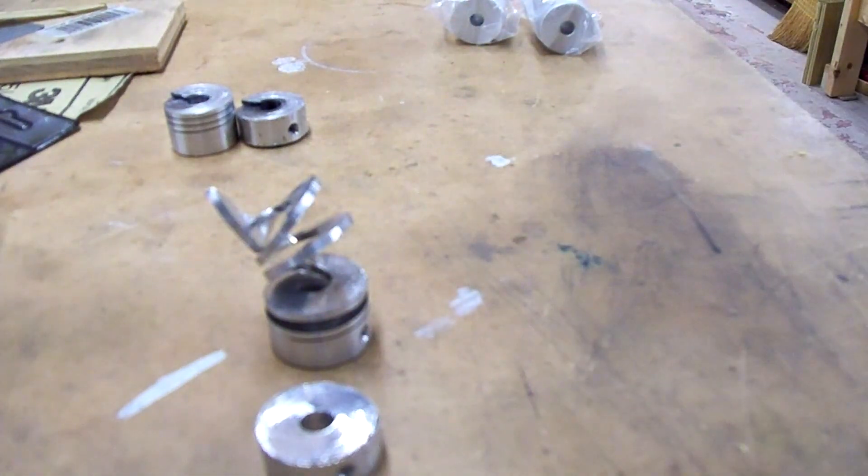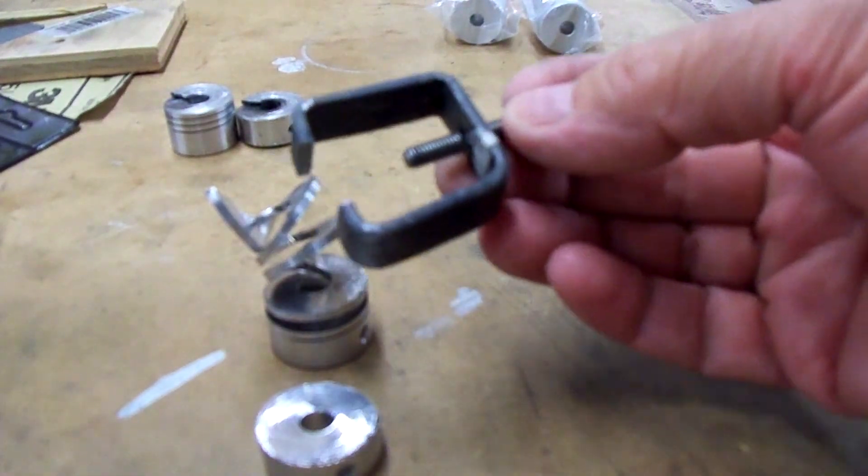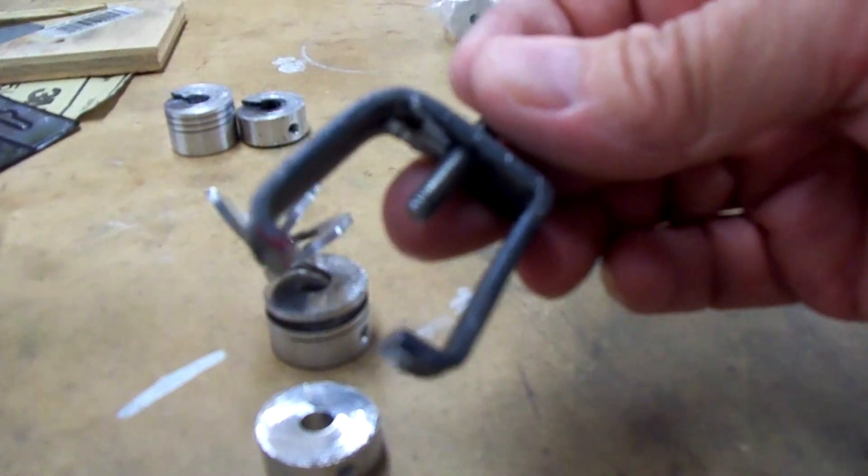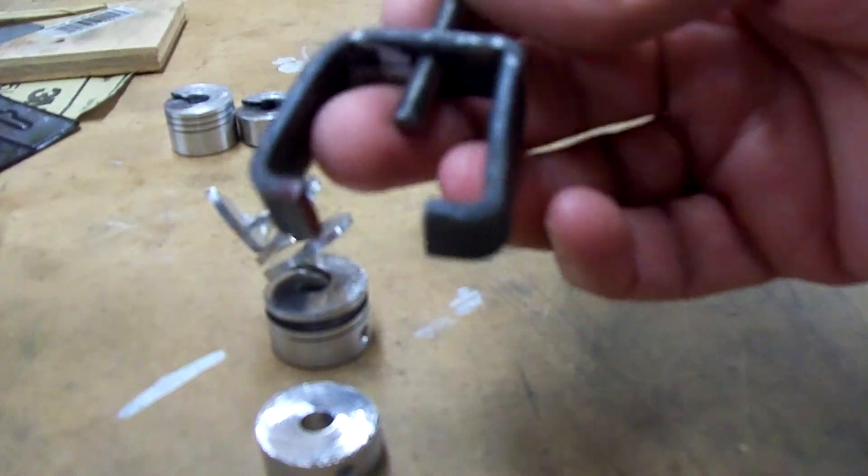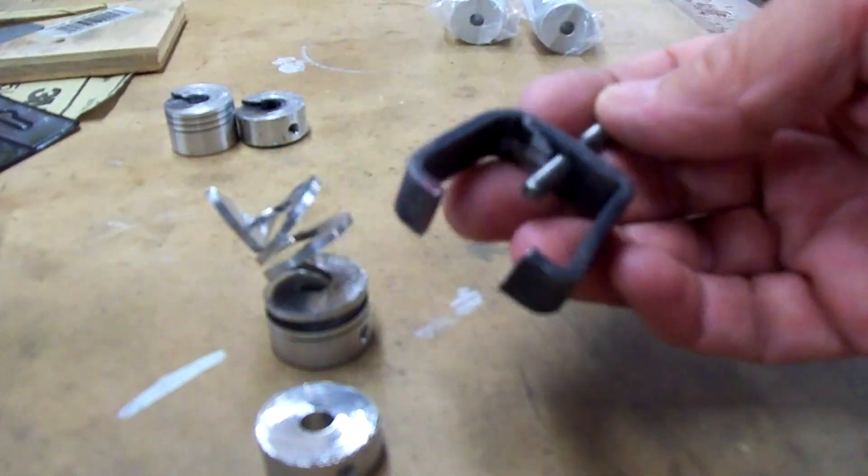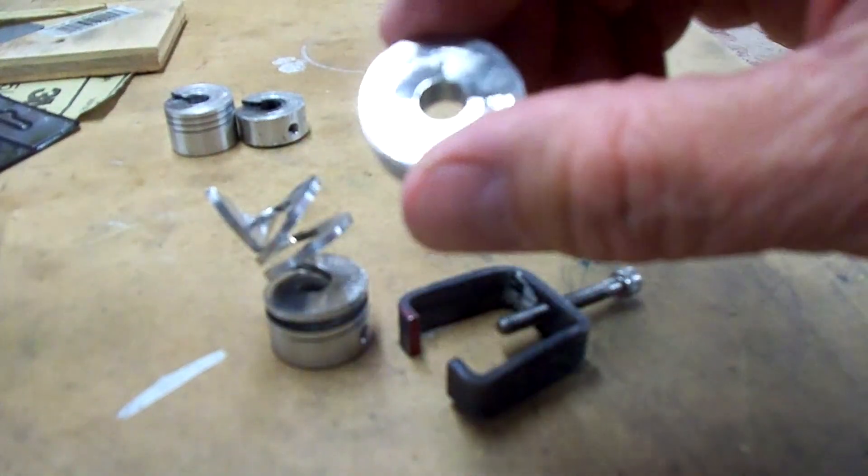So I had to make a little small puller. This is the little puller I made out of a little piece of half inch steel flat bar I had with a 10-32 screw. Had to make that to pull this off of the shaft.